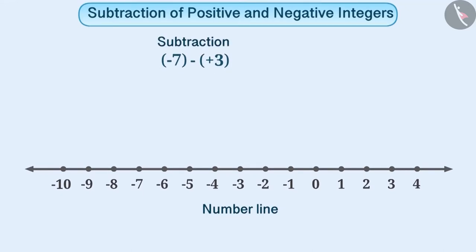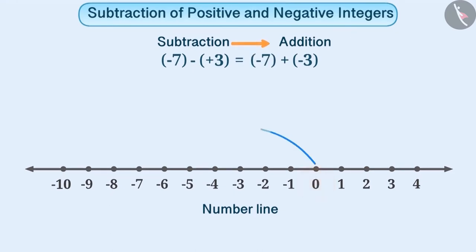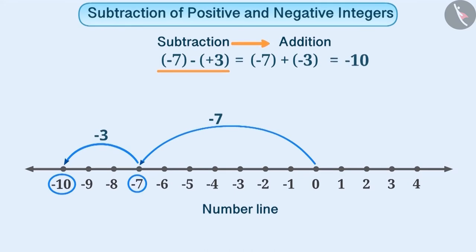In order to obtain the result of minus 7 minus plus 3 on the number line, first we will convert it into the operation of addition, that is minus 7 plus minus 3. The first number is minus 7, so we will move 7 steps towards the left of 0. The second number is minus 3, so we will again move 3 steps towards the left of minus 7. Thus, we reach minus 10. That means, the result is minus 10.